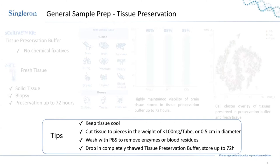Here are some tips for best preserving tissue after sample collection. First, keep the tissue cool on ice or an ice pack. Cut the tissue into pieces — we recommend 0.5 cm in diameter or less than 100 mg in weight. Wash with PBS to remove enzymes or blood residues, then drop the tissue completely into the preservation buffer, which must be fully thawed to avoid crystals. Store or transport the tissue up to 72 hours.